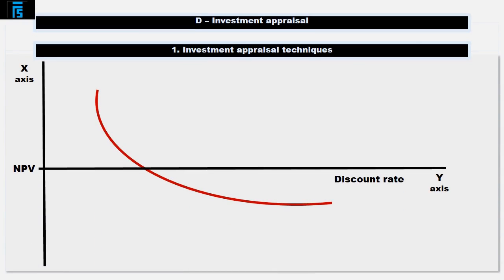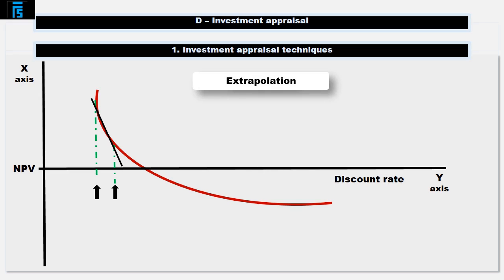You don't need to have a positive and a negative NPV for the formula to work. Suppose you picked 5% and 10% as discount rates and they both came out with positive NPVs — the formula will still work. This is known as extrapolation. It's technically not quite as accurate as interpolation, but it's still perfectly acceptable for the exam. You'll notice that the black line is still pretty close to the curve on the x-axis.